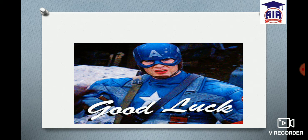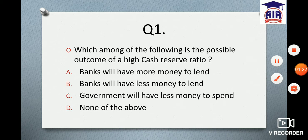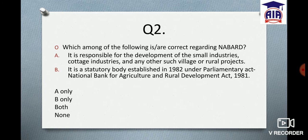First question: Which among the following is the possible outcome of a high Cash Reserve Ratio? Option A: Banks will have more money to lend. Option B: Banks will have less money to lend. Option C: Government will have less money to spend. Option D: None of the above. Type your answer in the comment section.